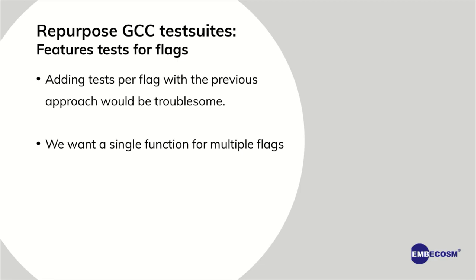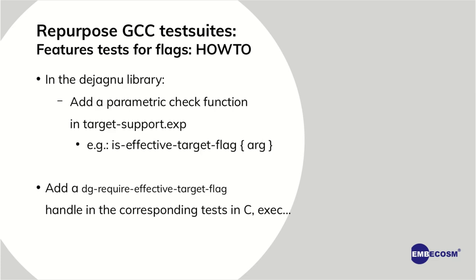But this could only solve some features. If you wanted to do the same for flags — and LLVM, like other compilers, has many flags that GCC probably doesn't support — we didn't want to add a feature, a handler, and a group of tests for each flag, because it would be too troublesome. What we wanted was a single function that could take arguments for any flags we needed. So, just as we did for the single-feature changes, we added in the DejaGnu library a parametric check function that would take the flag we were checking for, and add a corresponding flag in the test that would check whether the compiler was supporting that flag or not — and if not, mark it as unsupported, not as failing.